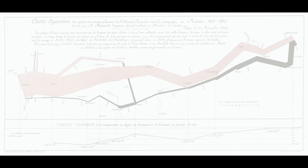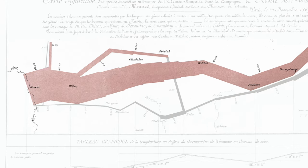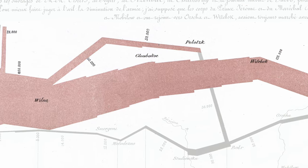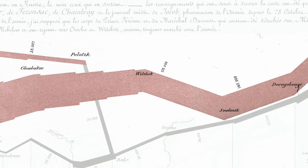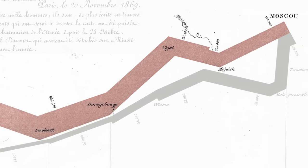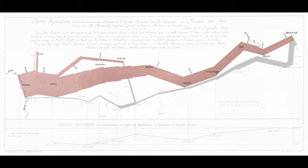The most obvious feature of the chart is this tan-colored ribbon going left to right, and this is actually on top of a stylized map. The ribbon goes from a place called Kovno, or Kaunas, in what is today Lithuania, to Moscow. The width of the ribbon shows the number of men in Napoleon's army. It starts with 422,000 at the beginning, and by the time they arrive in Moscow, they're down to 100,000. That's more than three out of four men not making it to Moscow.